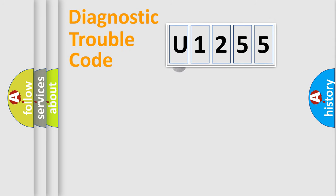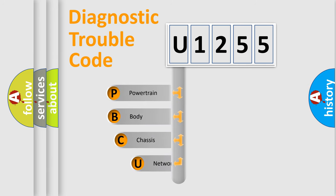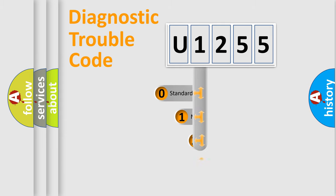First, let's look at the history of diagnostic fault code composition according to the OBD-2 protocol, which is unified for all automakers since 2000. We divide the electric system of an automobile into four basic units: Powertrain, Body, Chassis, and Network. This distribution is defined in the first character of the code.